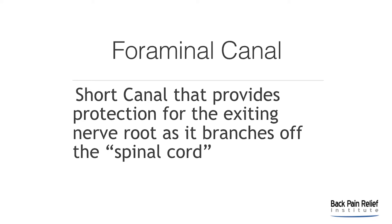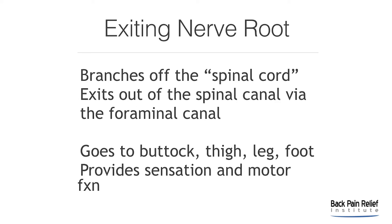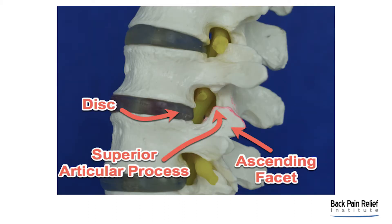The foraminal canal is a short canal that provides protection for the exiting nerve root as it branches off the spinal cord. The exiting nerve root branches off the spinal cord and exits out of the spinal canal via the foraminal canal. After the nerve gets out of the foraminal canal, it goes down to the buttock, thigh, leg, or foot, providing sensation as well as motor function. This is the anatomy from the previous foraminal stenosis video — the normal anatomy of the foraminal canal. We can see the borders of the disc on the front, the ascending facet in the back, which is the tip — the troublemaker — the little guillotine called the superior articular process. The descending facet is also on the back as well.